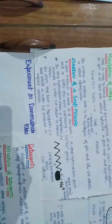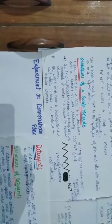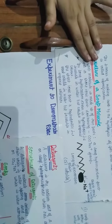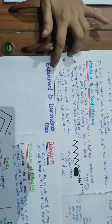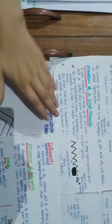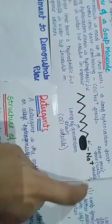A soap molecule is made up of two parts: a long hydrocarbon part and a short ionic part containing COO-Na+ group. The long hydrocarbon chain is hydrophobic, meaning it is not dissolved in water but dissolves in organic solvents because it is non-polar and water is polar. The short ionic part is hydrophilic, meaning it dissolves in water because it is polar. The long hydrocarbon tail is oil-soluble and the head, the short ionic part, is water-soluble.